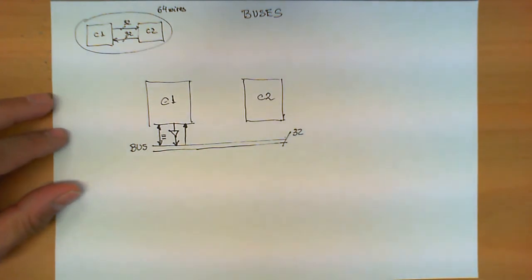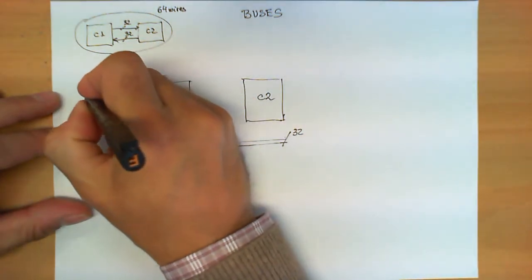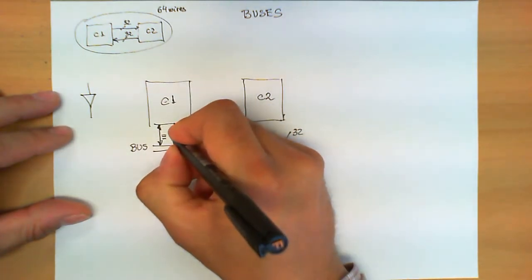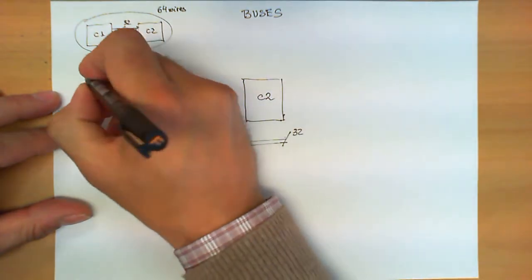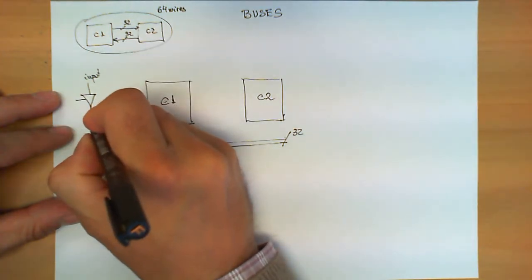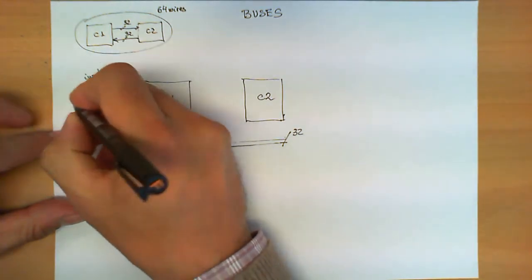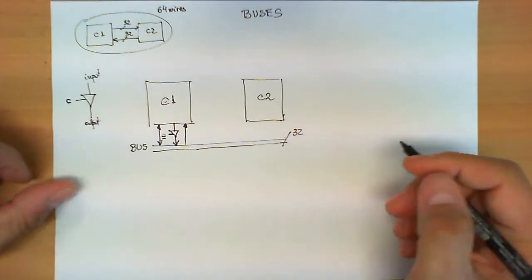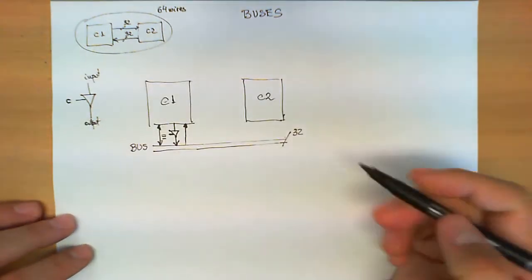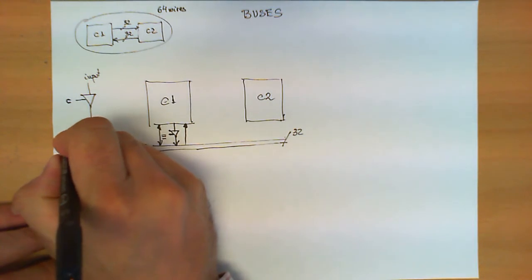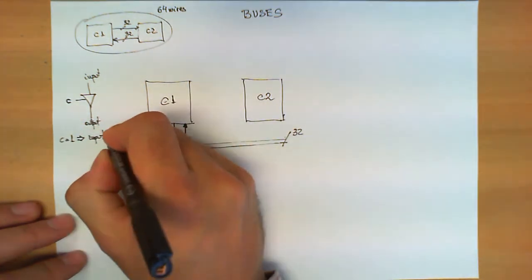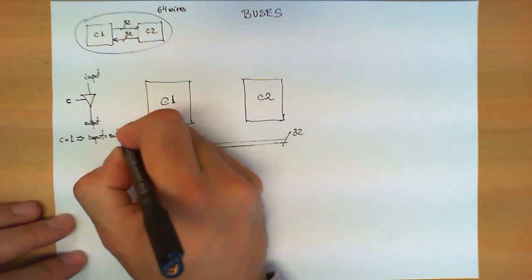Now let's see more in detail what we mean by this circuit. This circuit has an input, an output, and some signal called C. The behavior of this circuit is trivial. If C is equal to 1, then input is equal to output.